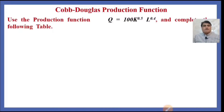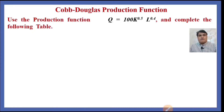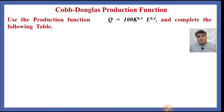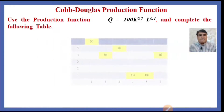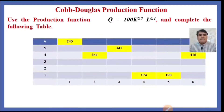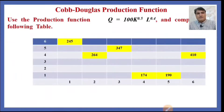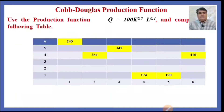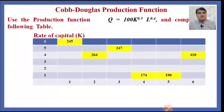What does this table indicate? Using the production function Q = 100K^0.5 × L^0.4, we have to complete the following table. Some values have already been filled, shown in yellow. By looking at these values and using the given production function, we have to complete the rest. This column is the rate of capital and this is the rate of labor.